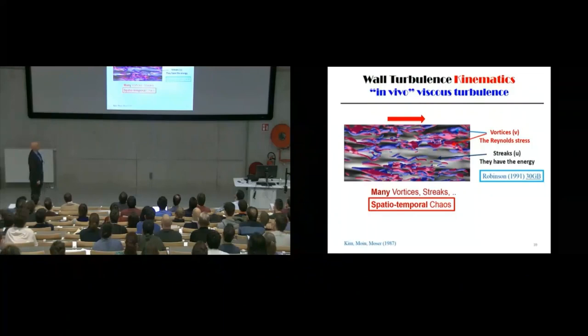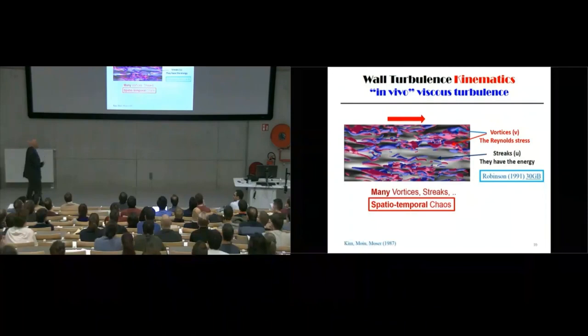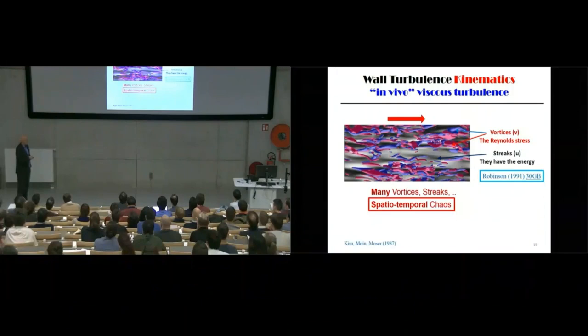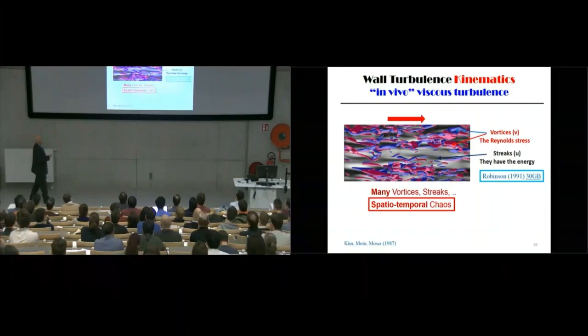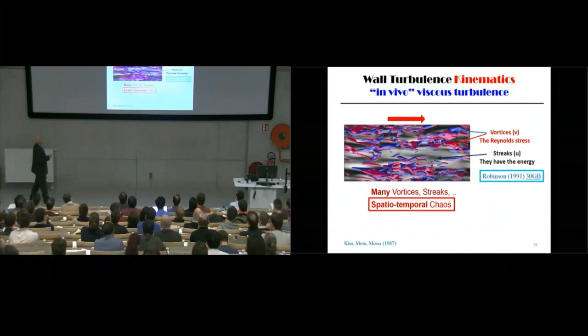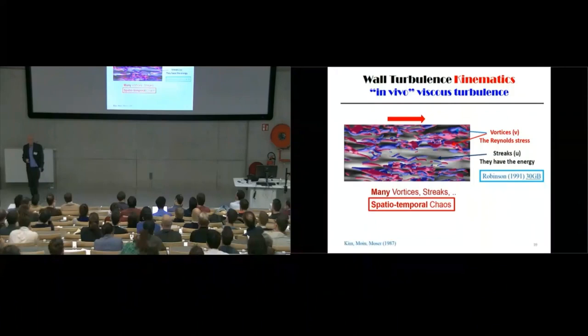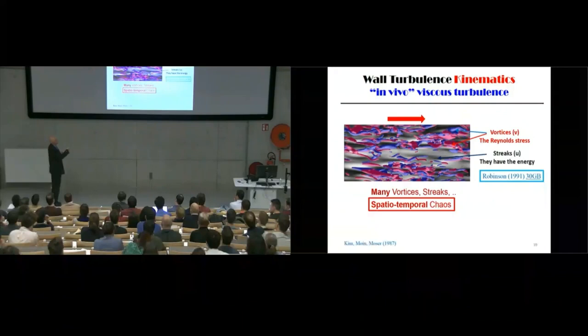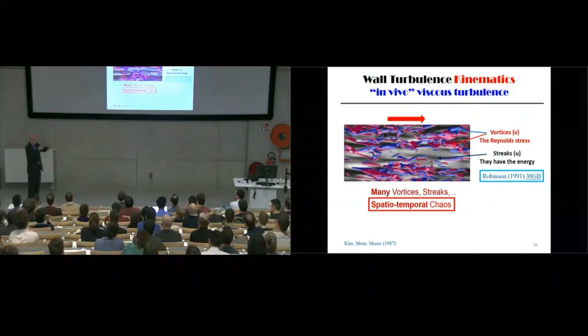Robinson sat in front of a computer for six months and decided these are the vortices. The vortices generate the Reynolds stresses near the wall and also do dissipation — these are the things that create the Reynolds stresses. The streaks carry the energy; the energy goes from the Reynolds stresses to the streaks. The problem is that there are many of these things and the whole thing is chaotic — no clear organization, and there is temporal chaos. This thing grows and decays in different places at different times.